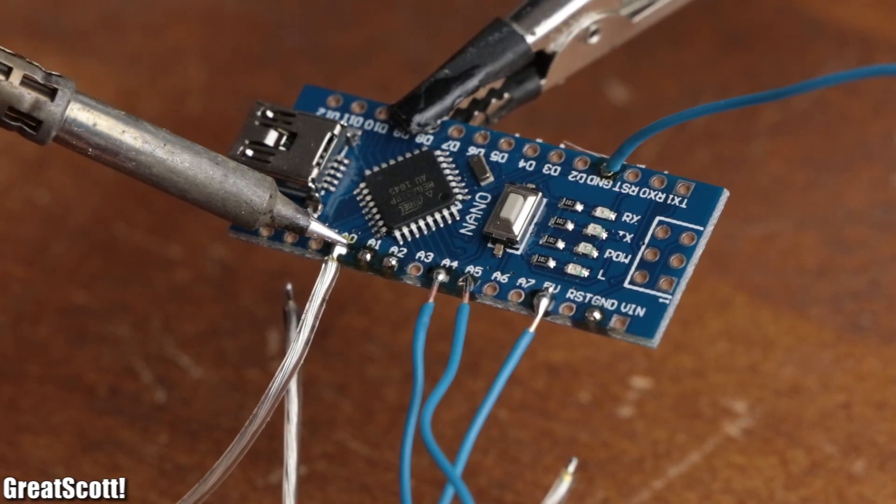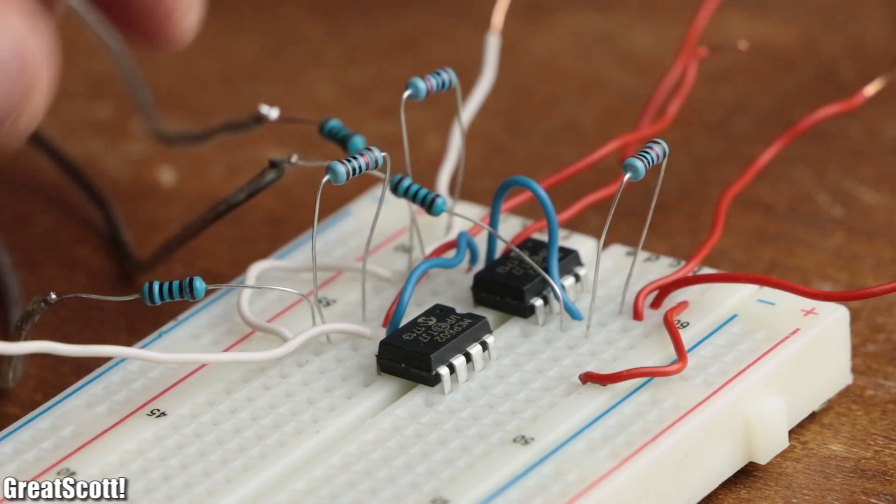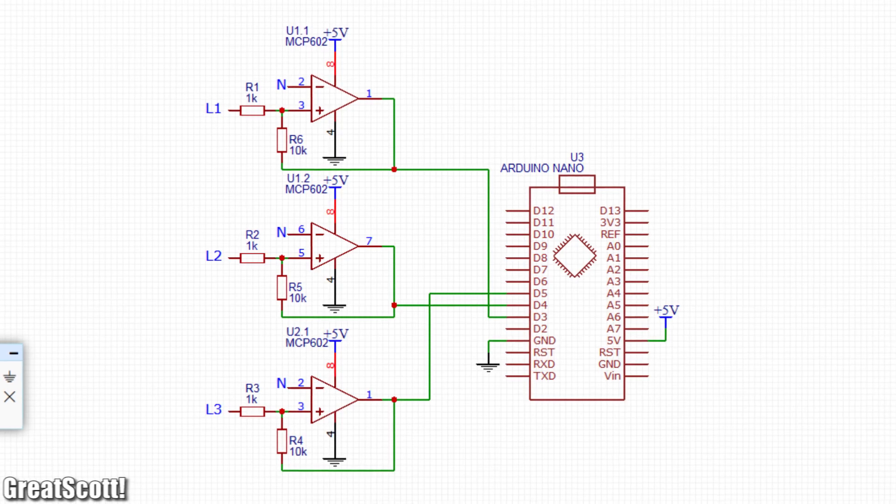That is why I removed the motor wires from the Arduino and instead connected them to two MCP602 rail-to-rail op-amps according to this simple schematic.